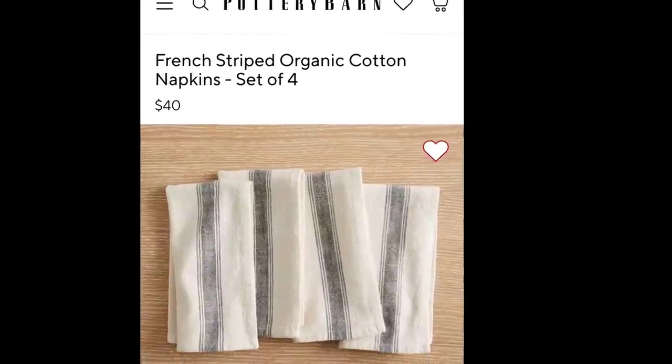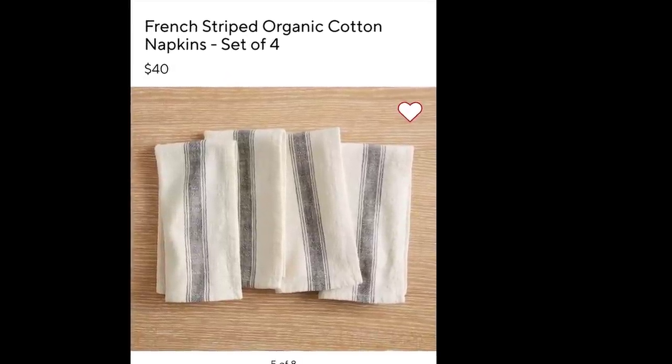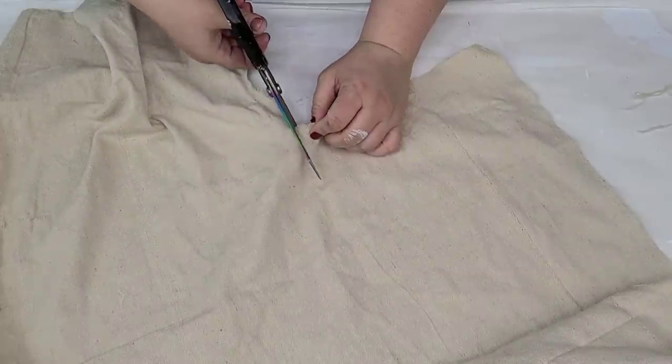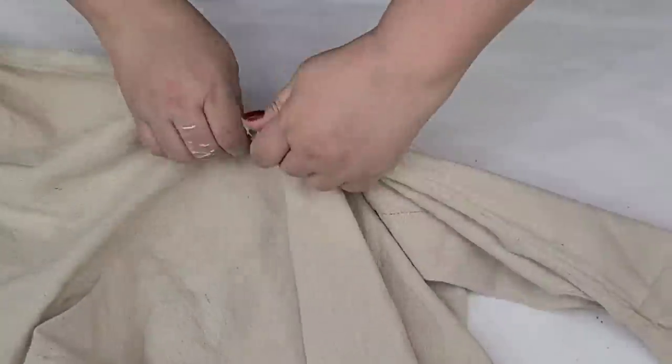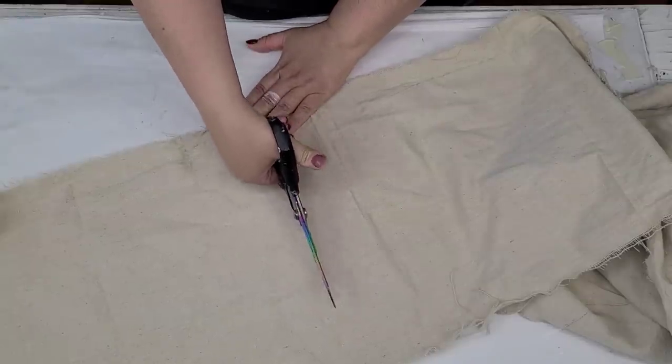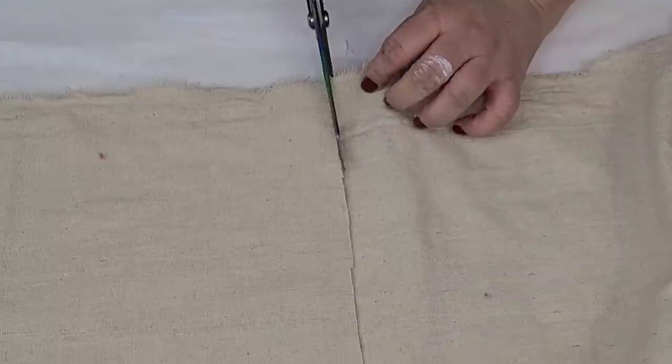For the next dupe inspiration comes from Pottery Barn, and it's French Striped Organic Cotton Napkins. It's a set of four for $40, and I'm going to try to recreate them with drop cloth. I'm going to start tearing as well as cutting four napkins, and they're going to be about 14 by maybe 15 inches. They're not exactly square, and I'm okay with that. So I'm just going to cut using the first one as a guide.